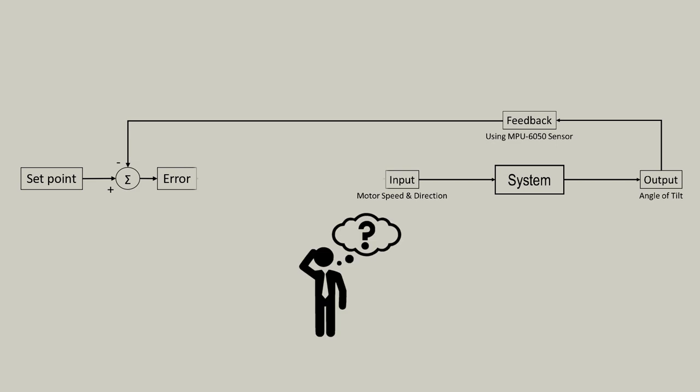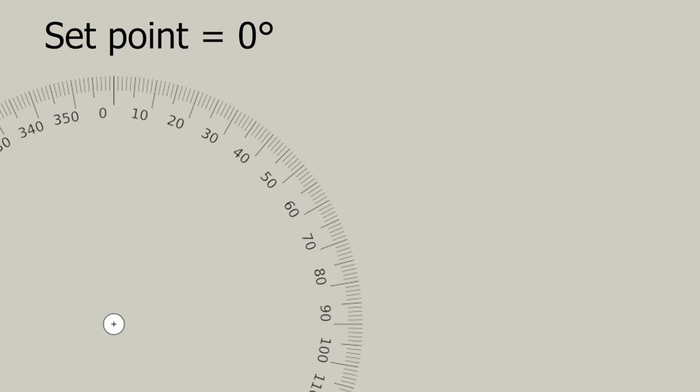So the question is, how do we take this error term and convert it into suitable actuator commands so that over time the error is driven to zero? The answer is with a controller. Now, let's say the desired angle of tilt is zero degrees, indicating an upright position.